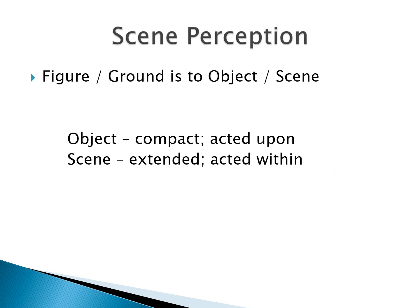We've been talking about object perception and we're going to talk about object perception within scenes, but first we have to talk about scene perception. The analogy is: figure is to ground as object is to scene. The object is compact and acted upon — usually what we remember from scenes are the objects. The scene is extended and acted within; like the ground, it's more unformed.